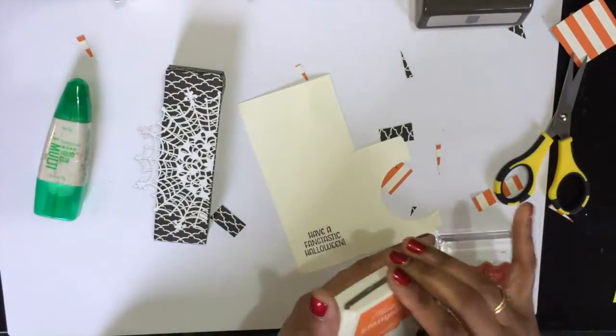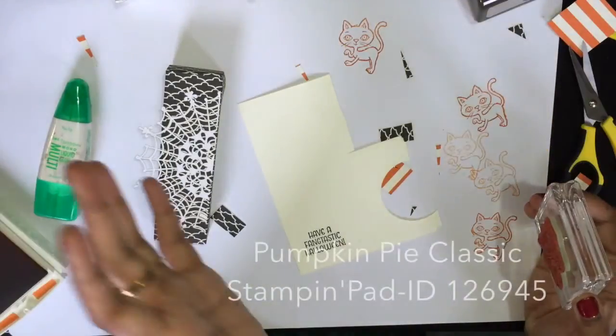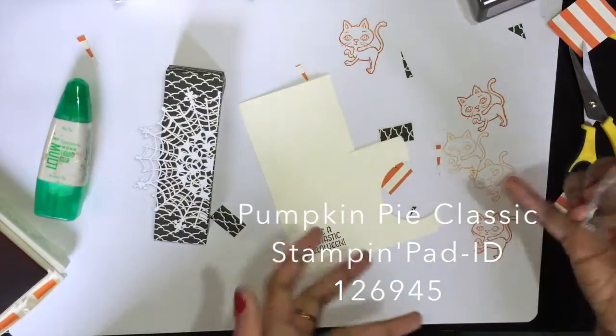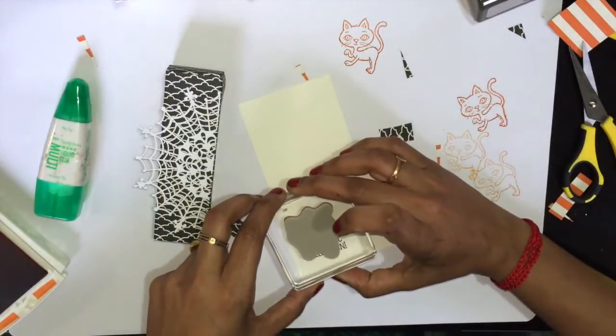I just want my cat in the background. I don't want my cat to be too tall. That's why I'm just stamping two times and stamping my third time here.